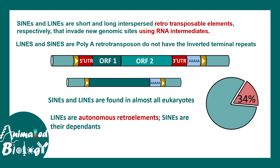LINEs are autonomous retroelements — that means they code for their own reverse transcriptase enzyme — whereas SINEs are actually dependent; they can't code for the enzyme themselves and are dependent on LINE-derived enzymes. As the name suggests, LINEs are much bigger compared to SINEs. Mouse LINEs are actually bigger than 6 kilobase pairs, whereas human SINEs range from 200 to 400 base pairs.